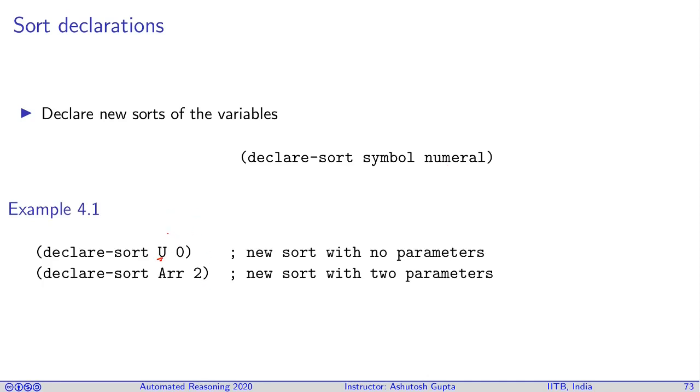You have this new sort being declared, u, and it takes no parameter. Let's consider this sort where you have a sort array which takes two parameters to declare. That means any variable you declared of type array has to have two sorts.